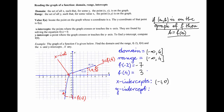The graph crosses the y-axis at the point (0, 1), and this is my y-intercept. A function can have only one y-intercept because it would not pass the vertical line test, but a function can have infinitely many x-intercepts.